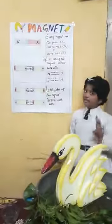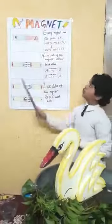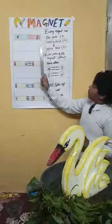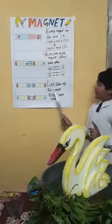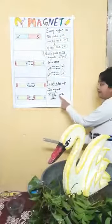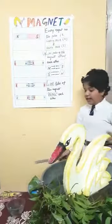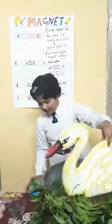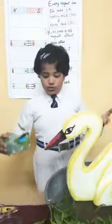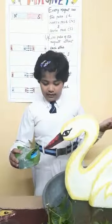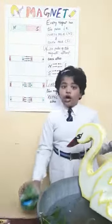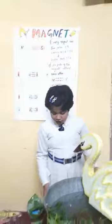Every magnet has two poles: north pole and south pole. Like poles of two magnets repel each other. Like here, when I brought grass closer to the duck, it moved to the other side because of repulsion.